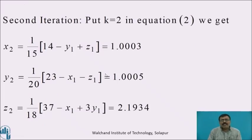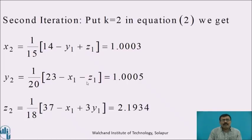Second iteration: put k = 2 in equation 2: x2 = 1/15 × (14 − y1 + z1) = 1.0003; y2 = 1/20 × (23 − x1 − z1) = 1.0003; z2 = 1/18 × (37 − x1 + 3·y1) = 2.1934.